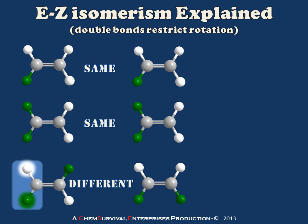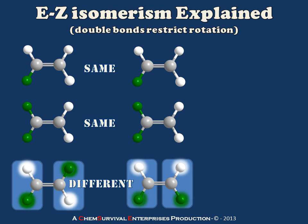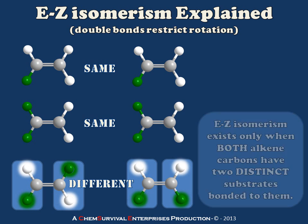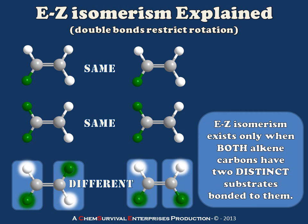Our requirement here is that we have these alkene carbons which contain two distinct groups. In my other examples where they were the same, I had at least one of my two alkene carbons having exactly the same group attached. So E-Z isomerism exists only when both alkene carbons have two distinct substituents each.